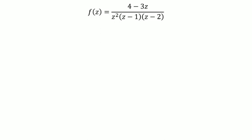This function has three poles — poles are where the function is not defined. At z equals 0, z equals 1, and z equals 2. Here z equals 0 is a double pole because we have z-squared in the denominator, and z equals 1 and z equals 2 are simple poles.